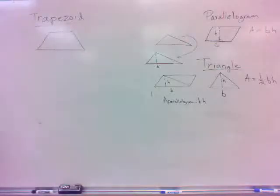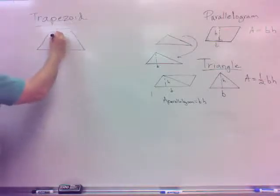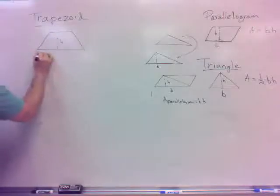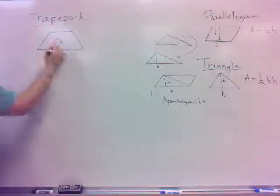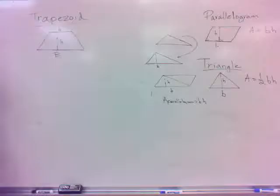Turns out you need three measurements to get the area here. You do need the height, but you also need the length of each of the parallel sides, so this side and this side is what you need. Some books call it different things, but we'll call ours Big B and Little B.